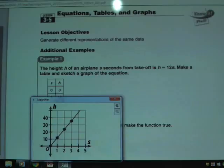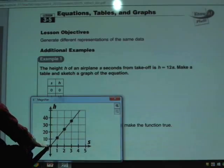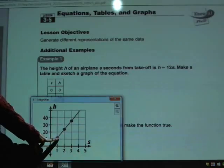So the first number being 0, 0 is going to be right at the origin. And then the next pair we came up with was 1, 12. So I'm going to go over 1 and go up to 12.